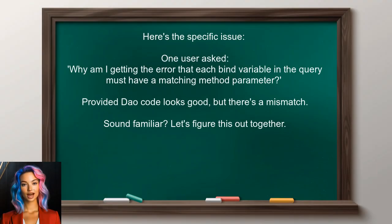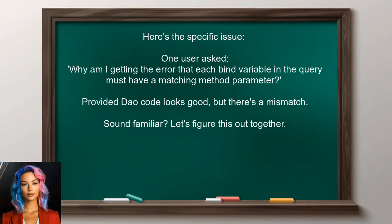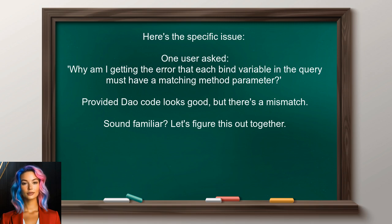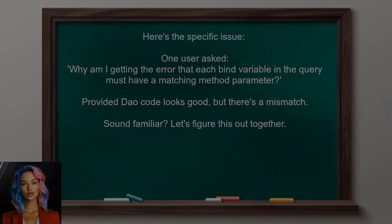Let's dive into the specific issue at hand. One user recently asked: why am I getting the error that each bind variable in the query must have a matching method parameter? They provided their DAO code, which looks good at first glance, but the error message suggests there's a mismatch. Sound familiar? Let's figure this out together.